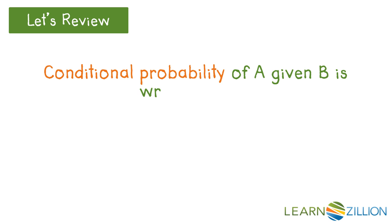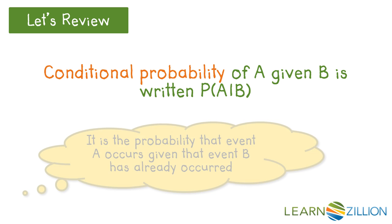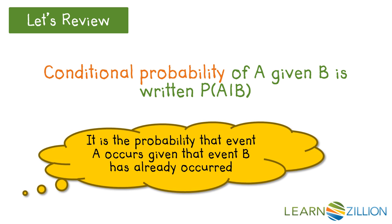Also, the conditional probability of A given B is written as P(A|B). It is the probability that event A occurs given that event B has already occurred.